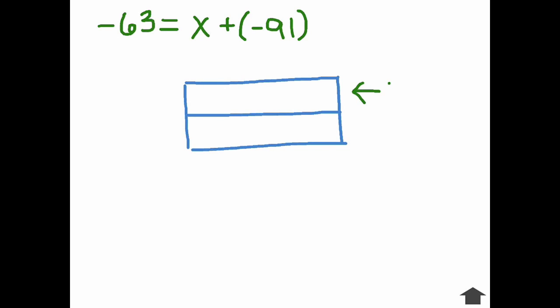Again, I'm going to have my whole. My top. My parts. That's the bottom line. My whole is negative 63. This seems odd because I think of 91 as being larger than 63. And this is where I need to understand what is happening in my equation.